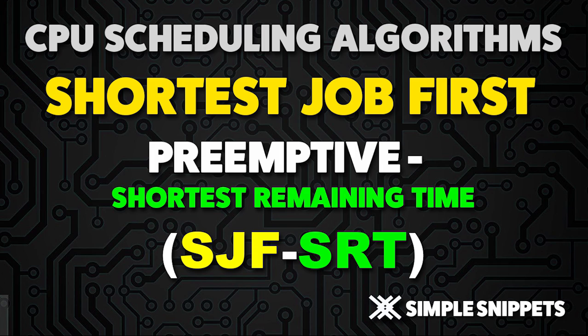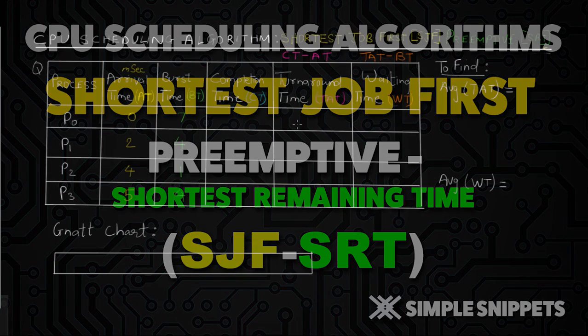This algorithm is also known as SRT, which stands for Shortest Remaining Time. So don't get confused when you're asked to calculate different criteria for the SRT algorithm — SRT and SJF with preemption are the same. With that being said, let's get started.